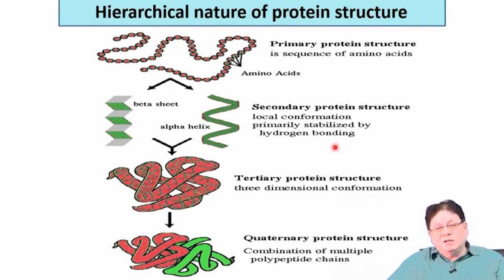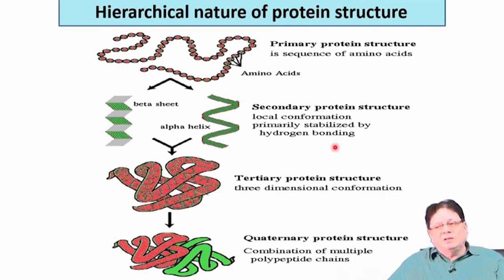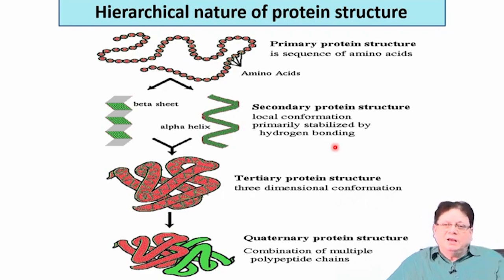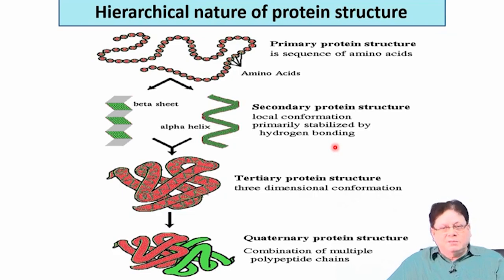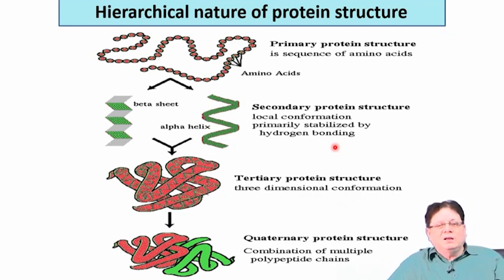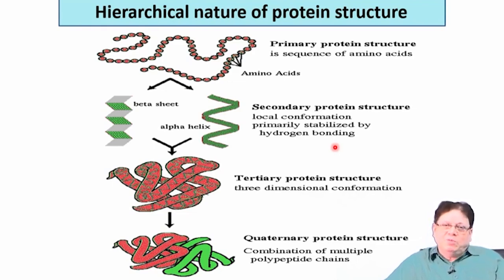The hydrogen bonding occurs between the NH and the CO — NH is the hydrogen bond donor and the carbonyl (the amide bond) is the acceptor. Those are the key points for considering hydrogen bonds in secondary structure.